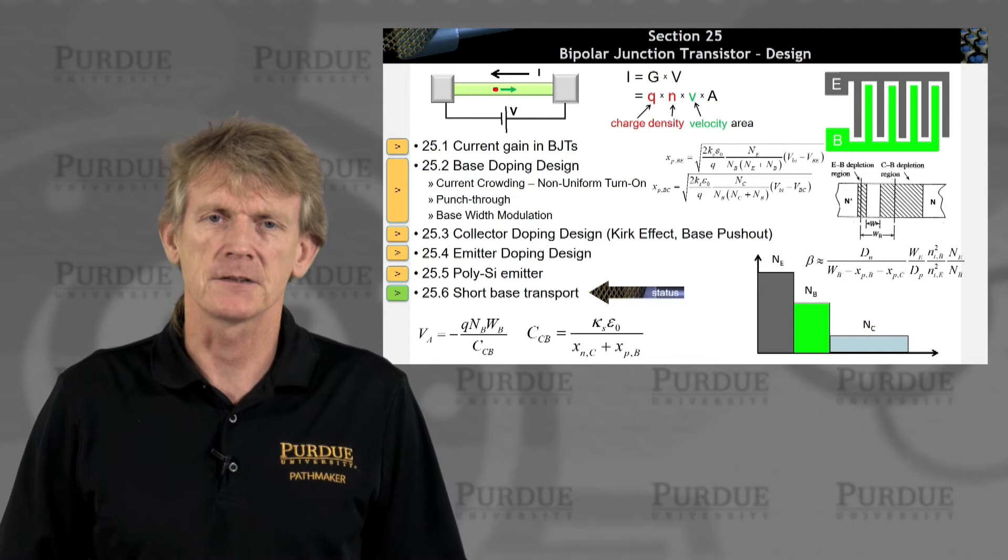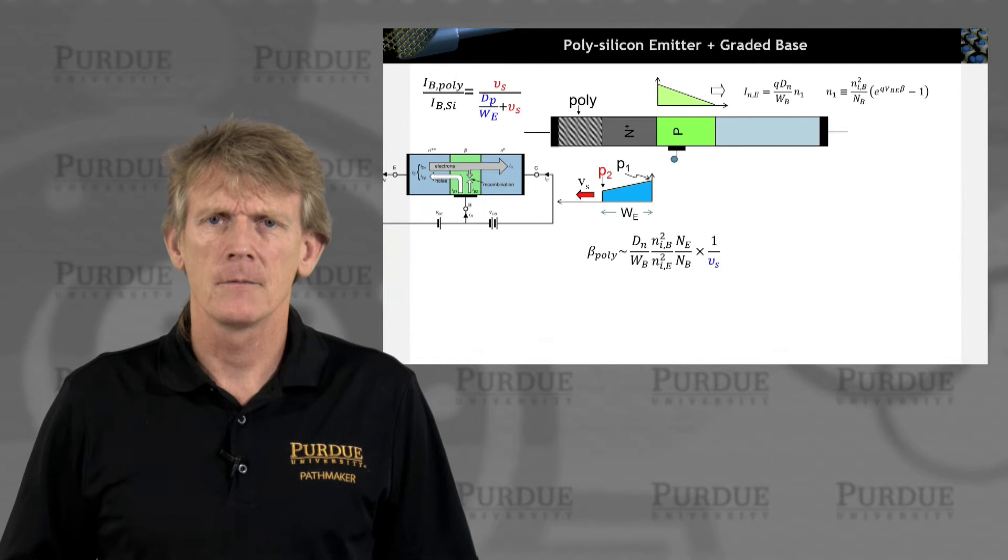Alright. We've reached the last element on BJT design questions. That's short base transport. So let's dive right in.